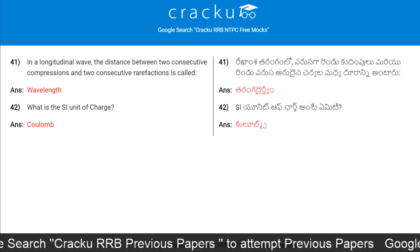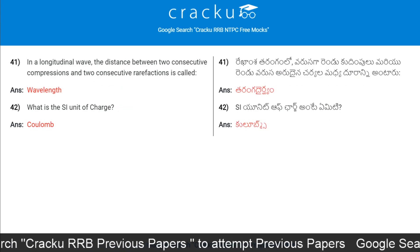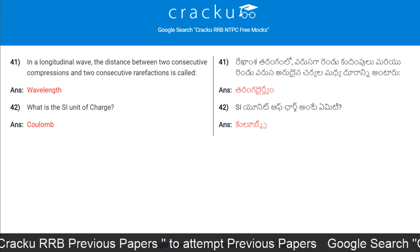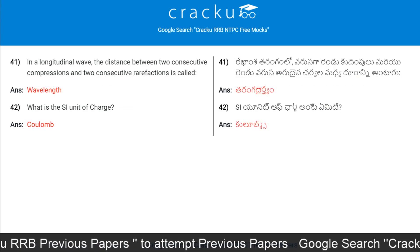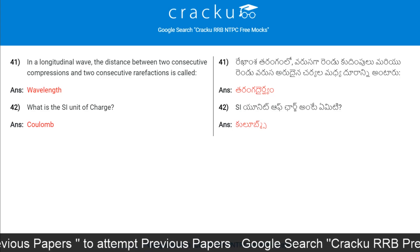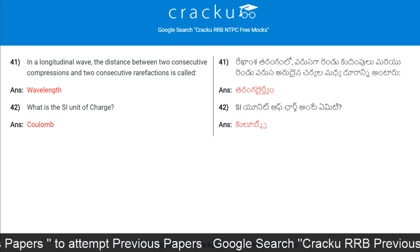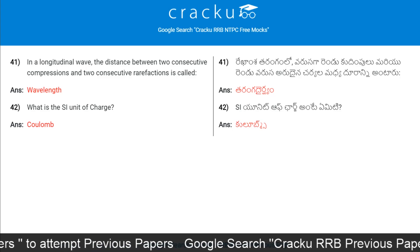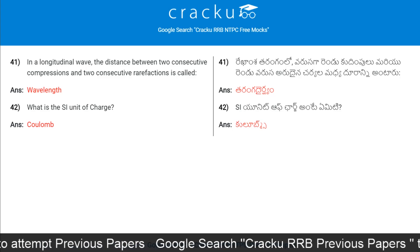In a longitudinal wave, the distance between two consecutive compressions or two consecutive rarefactions is called wavelength.